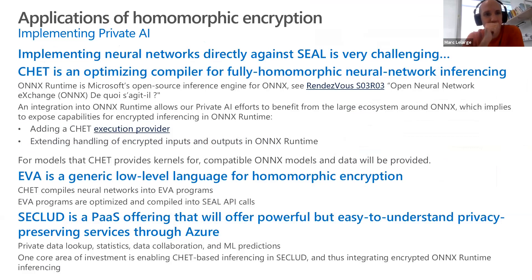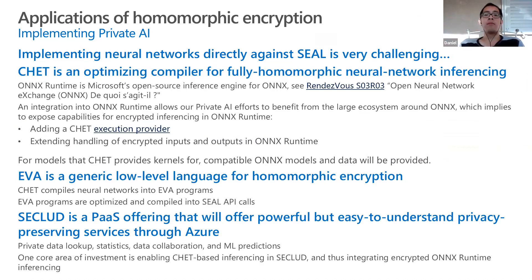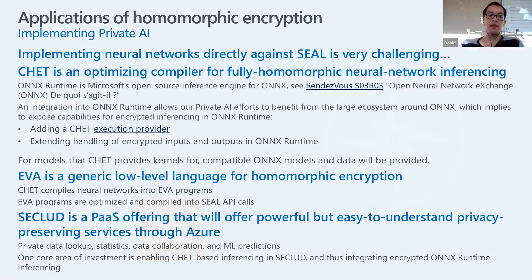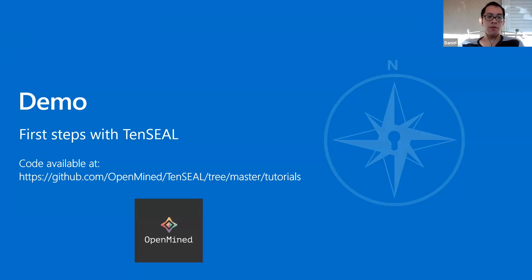There is work on making a compiler for ONNX — a runtime that lets you take a model trained in PyTorch or TensorFlow and produce a generic format — that would provide a homomorphic encryption runtime. This would make it transparent for data scientists. However, in practice it's still not easy to use and requires expertise. The first library I'll show is TenSEAL, a Python library for homomorphic encryption — a Python wrapper around the SEAL library developed by Microsoft.